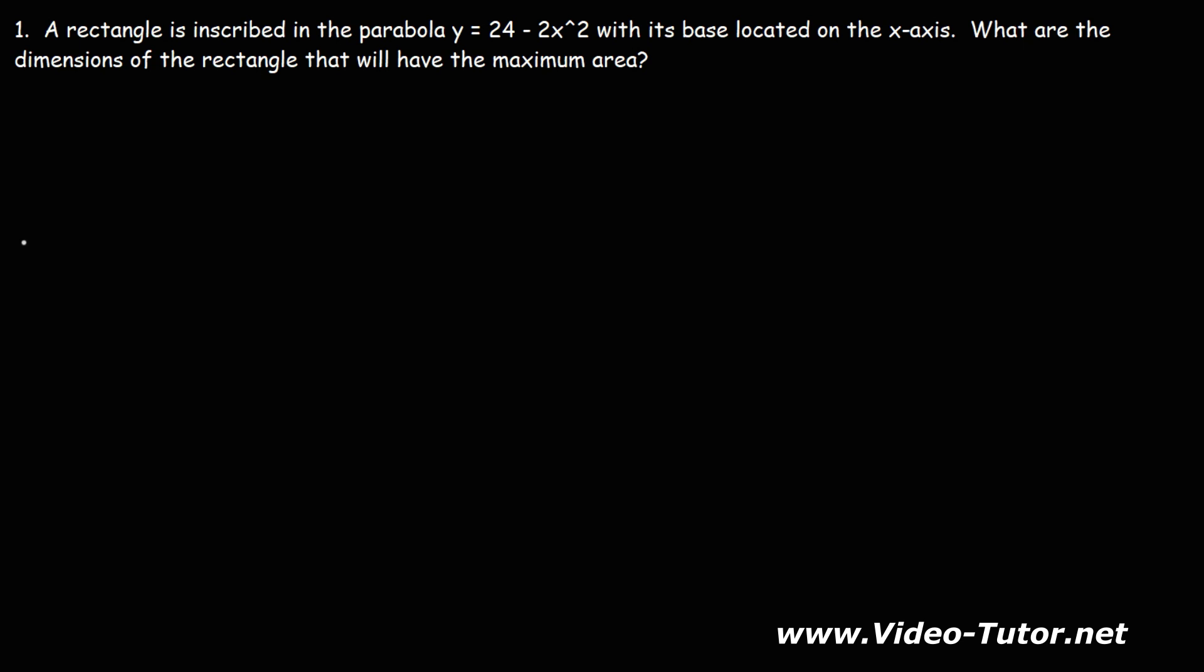One of the best things we could do right now is to draw a picture. We have a parabola, and notice that there's a negative sign in front of the x squared term. So this parabola is going to have a y-intercept of 24, and it's going to open downward. We don't need a perfect graph in order to get the right answer, but it's going to look something like this.